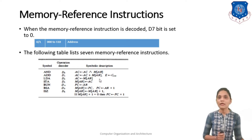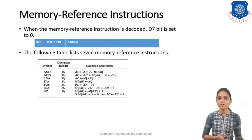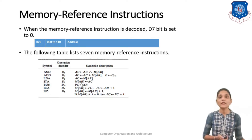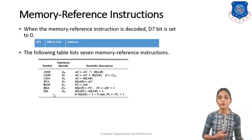For addition you are adding the memory location's content stored in AR to the accumulator. For the LDA instruction you are loading the memory location's content pointed by MAR into the accumulator. For the STA instruction you are storing the content of the accumulator to the memory location AR. For the BUN instruction you are changing the sequence of the program by updating the Program Counter, and for that your control signal will be D4. For BSA your control signal will be D5 and for ISZ your control signal will be D6.